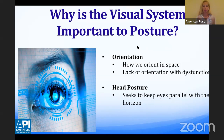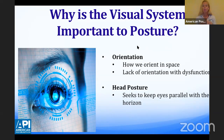The visual system plays an important role in orientation because we can see our environment. For example, if you're walking and you see a speed bump, you change the orientation of your body so you don't trip. When you close your eyes, you get disoriented — even in a familiar space, you know where the door is, but walking to it with eyes closed changes your posture position and gait pattern because you're now reliant on the rest of your sensory systems.